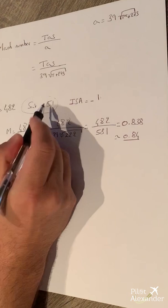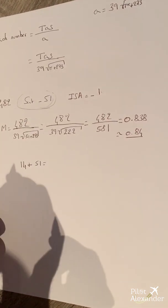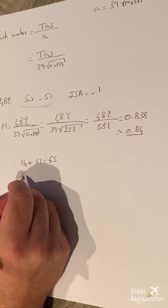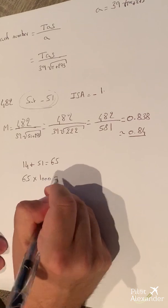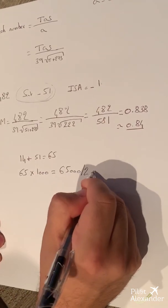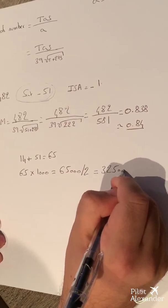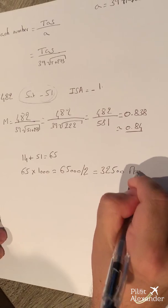We do 14 plus 51, which is 65. So 65 times 1,000 equals 65,000 — it's the same thing. Now 65,000 divided by 3,250 gives us 32,500 feet. So we were flying at FL325.